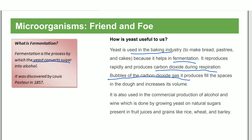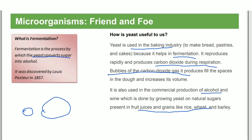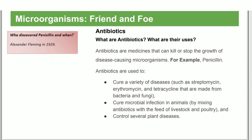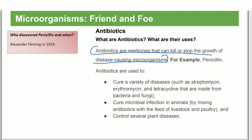The carbon dioxide gas fills out the bread, making it soft and spongy. Alcohol is also produced from fruit juices, barley, and wheat. Antibiotics are substances that kill or stop the growth of disease-causing organisms.